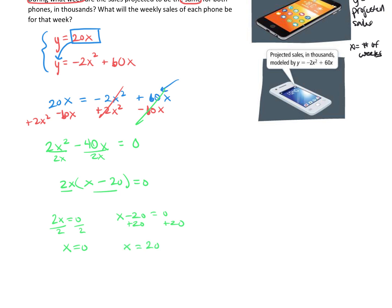So remember, x is representing our number of weeks. If we get a solution of x equals zero, we are saying the projected sales are the same at zero weeks. And that is not true. x equals 20 tells us they will be the same at 20 weeks.